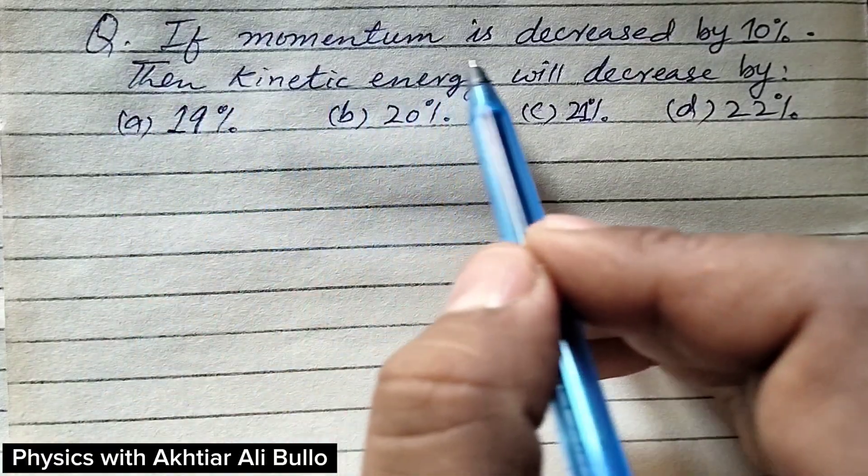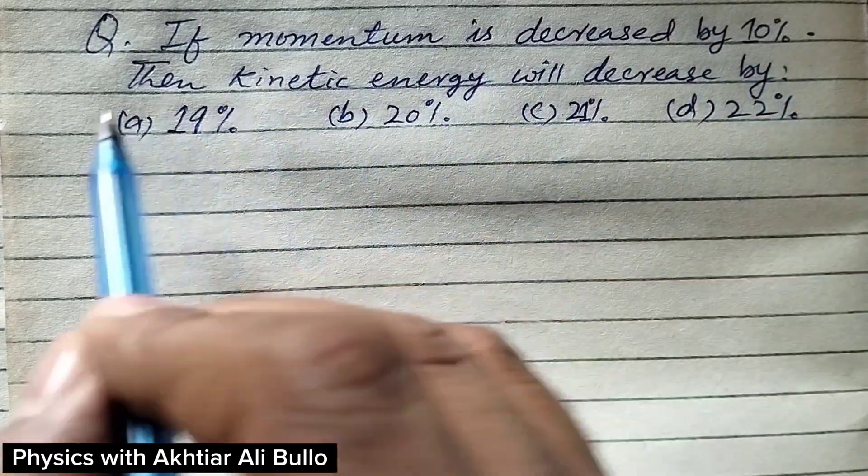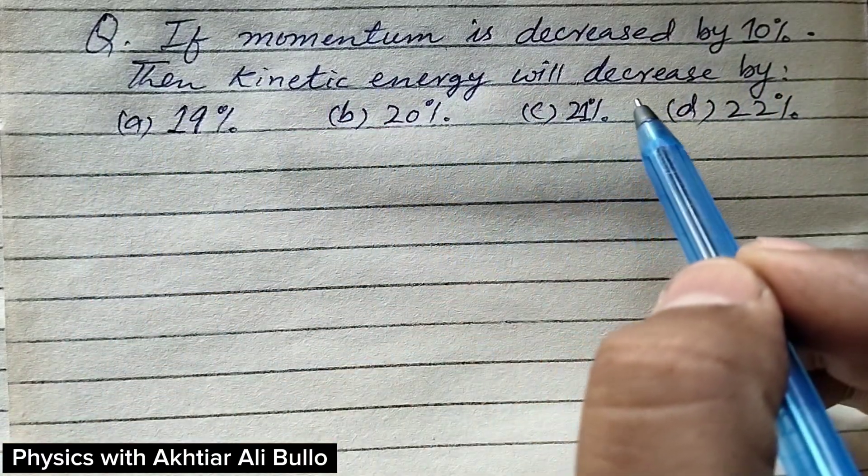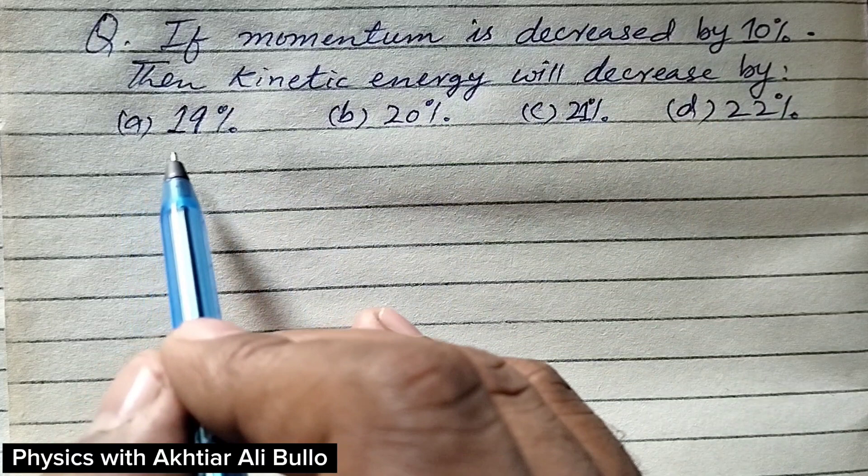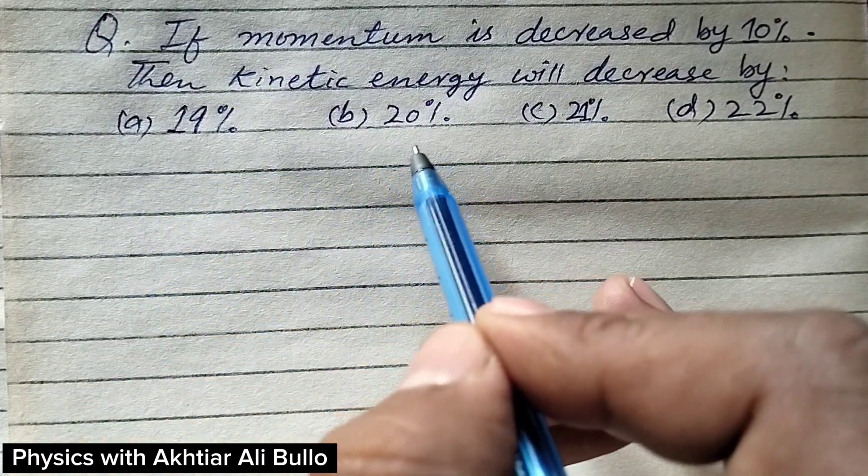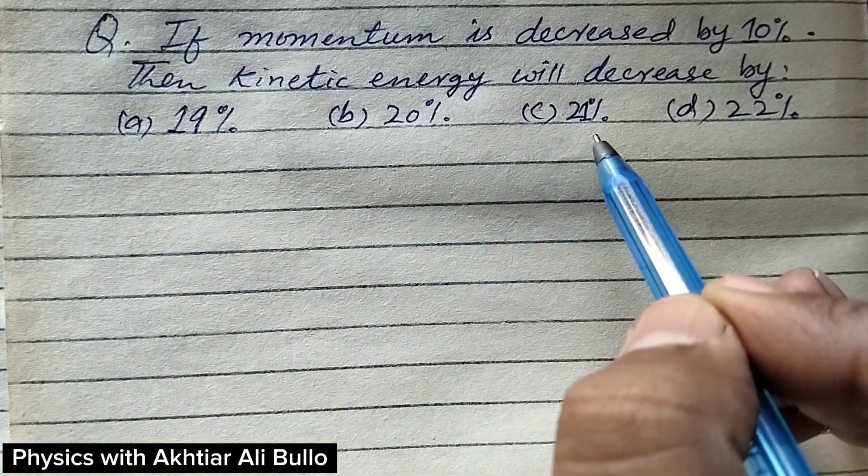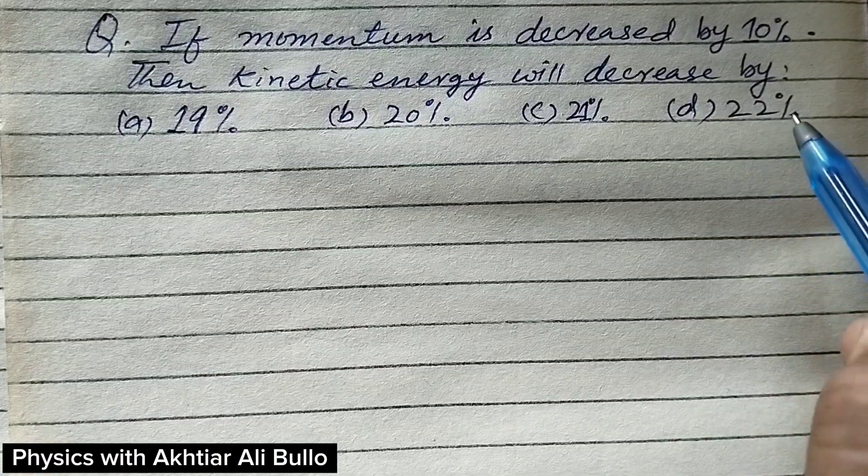The question is, if momentum is decreased by 10 percent, then kinetic energy will decrease by: (a) 19 percent, (b) 20 percent, (c) 21 percent, (d) 22 percent.